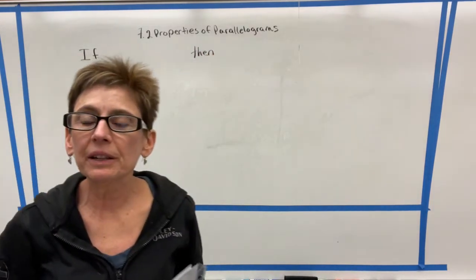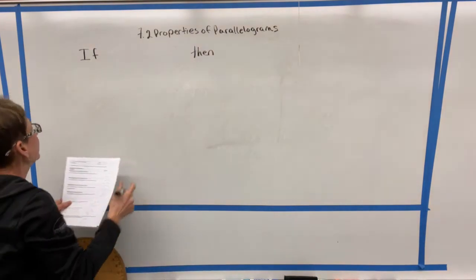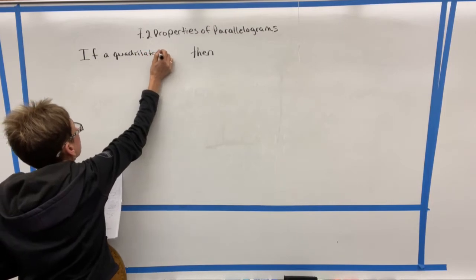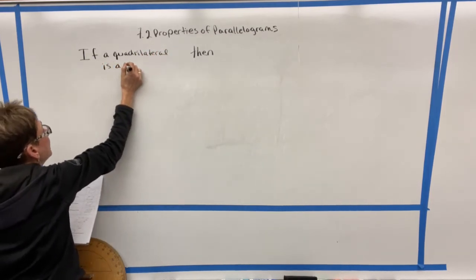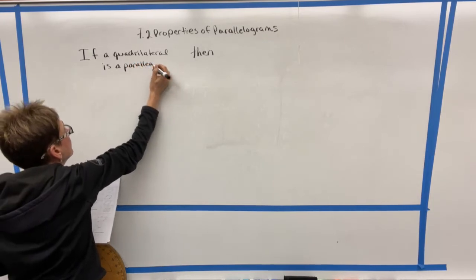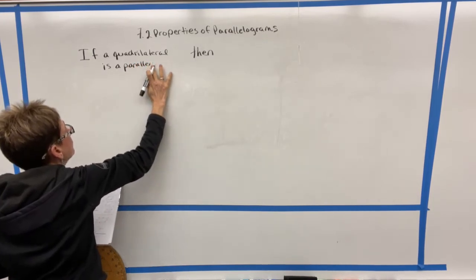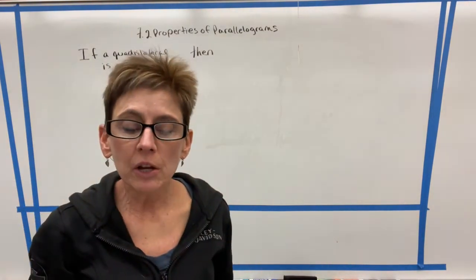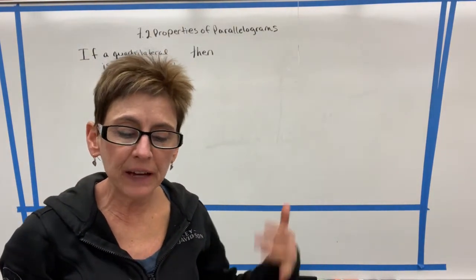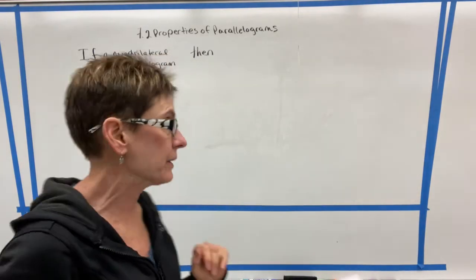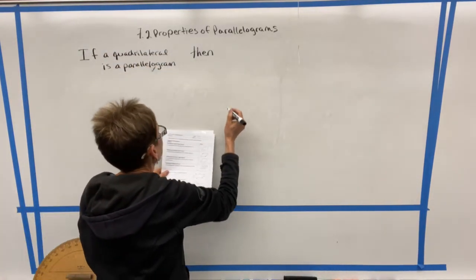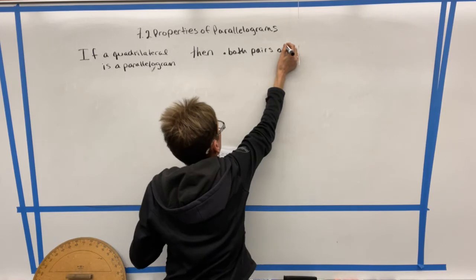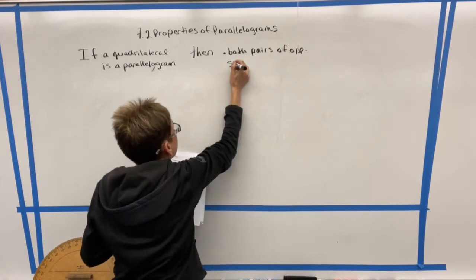So the conditional statement that we're going to be looking at today is when we say if a quadrilateral is a parallelogram, then several different things are going to be true. Rather than repeat the if every single time, I'm just going to list all the things that are then true. So then several things are true. We know that both pairs of opposite sides are congruent.